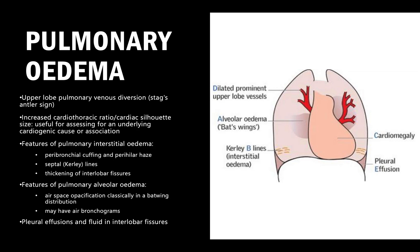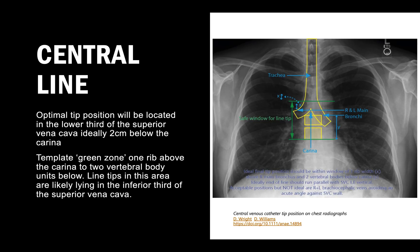Additional pulmonary edema signs include cardiomegaly, dilated upper lobe vessels, and pleural effusion. There are stages of pulmonary edema and it can cause all of these findings. Pause the slide and have a look at the signs written on it - these are the things we might be asked to comment on from a surgical point of view.